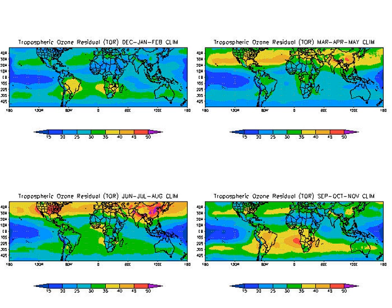The majority of tropospheric ozone formation occurs when nitrogen oxides (NOx), carbon monoxide, and volatile organic compounds react in the atmosphere in the presence of sunlight, specifically the UV spectrum. NOx, CO, and VOCs are considered ozone precursors. Motor vehicle exhaust, industrial emissions, and chemical solvents are the major anthropogenic sources of these ozone precursors. Although the ozone precursors often originate in urban areas, winds can carry NOx hundreds of kilometers, causing ozone formation to occur in less populated regions as well.